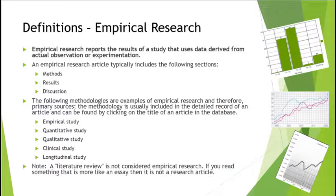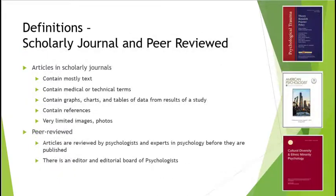For this assignment, it is really important to understand the definition of empirical research. Empirical research reports the results of a study that uses data derived from actual observation or experimentation. An empirical research article typically includes the following sections: methods, results, and discussion. Examples of empirical research methodologies include an empirical study, quantitative, qualitative, clinical, or longitudinal study. If you read an article and it reads more like an essay, it's probably a literature review. It's really important to understand the difference between scholarly journals and popular journals.